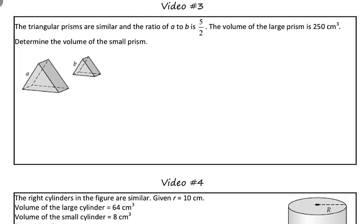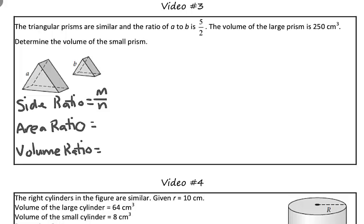What you learned in the previous investigation, or the previous two investigations, was that if we know the side ratio between similar figures is M over N, then we know there is a relationship between the ratio of their areas and the ratio of their volumes. We know that the area ratio is M squared over N squared, and their volume ratio is M cubed over N cubed.